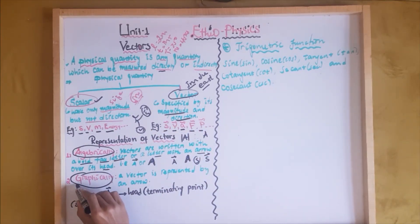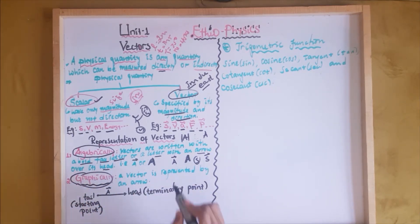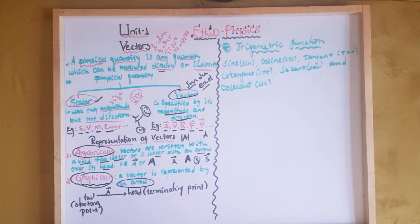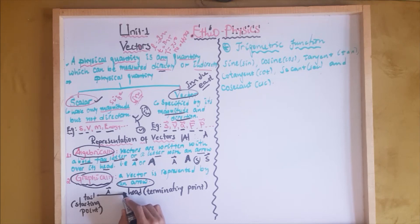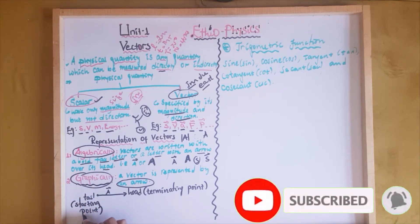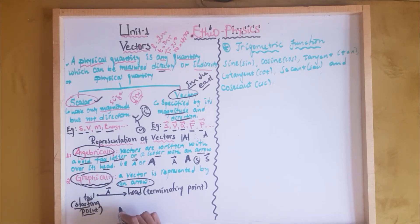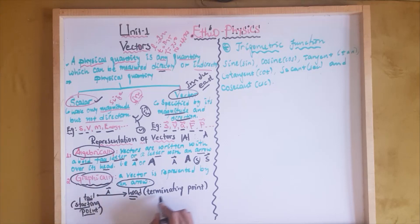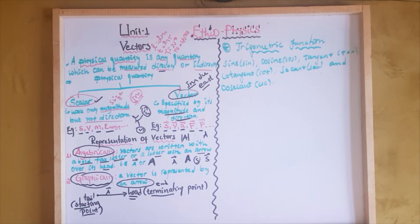This represents a vector graphically. Graphically, vectors are represented by an arrow. The starting point of the arrow is called the tail. The terminating point represents the heading point and is called the head.